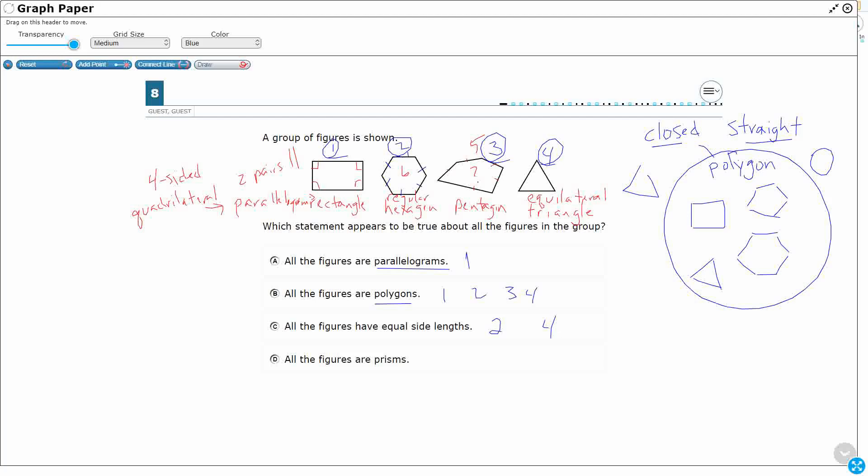And then all figures are prisms. None of the figures are prisms. Prisms are 3D shapes, right? So if we're thinking like this, that's a cube, right? Or it might be a rectangular prism depending on how I drew it. So my answer here is B.